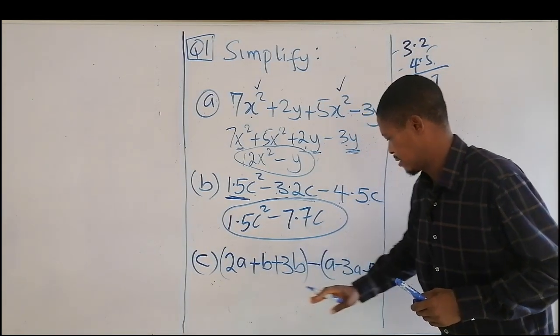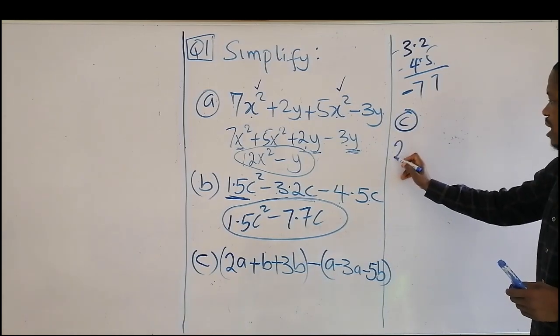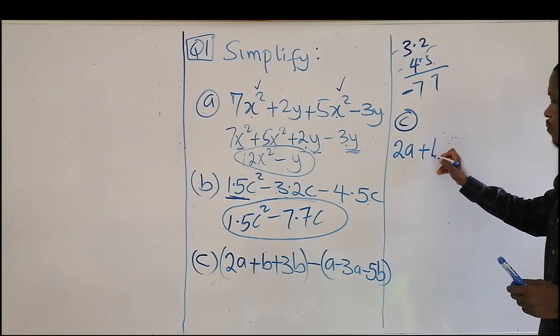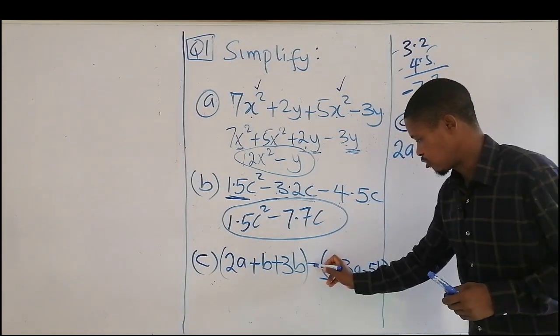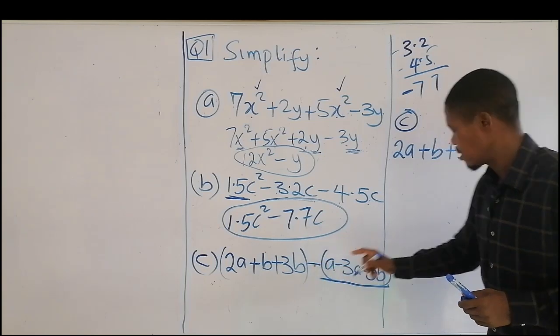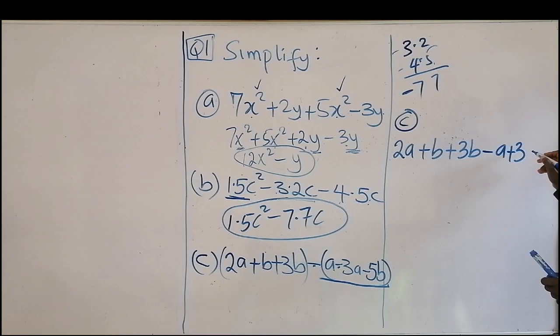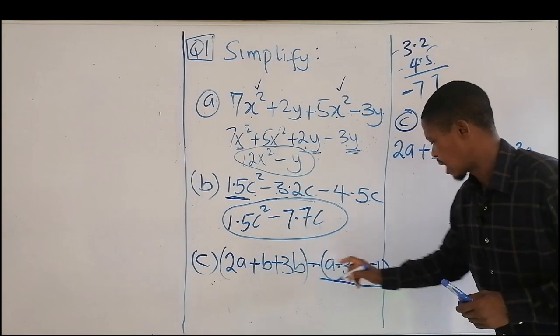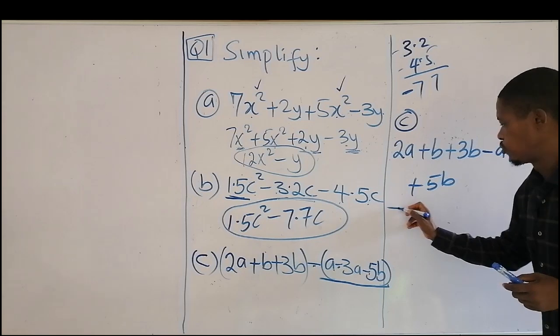What we do is open the brackets. In the process of opening the brackets, the minus will alter all the signs inside. Minus times a, that's minus a. Minus times minus, that's plus 3a, and minus times minus, that's plus 5b.